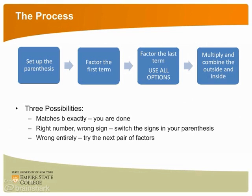Factoring quadratic trinomials where the leading coefficient — the a — is not one is more complicated than cases where a does equal one. Not only do we need to be careful that our signs are correct, we also have to ensure that the factors are placed in the correct positions. There is no straightforward method for factoring such polynomials, so we are forced to work by guess and check, sort of.